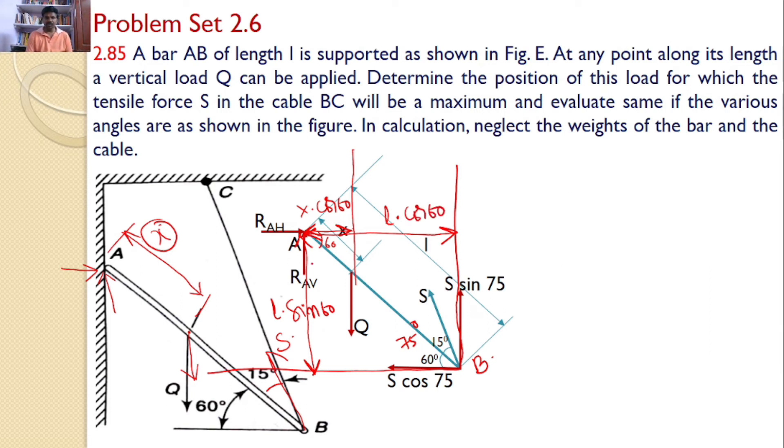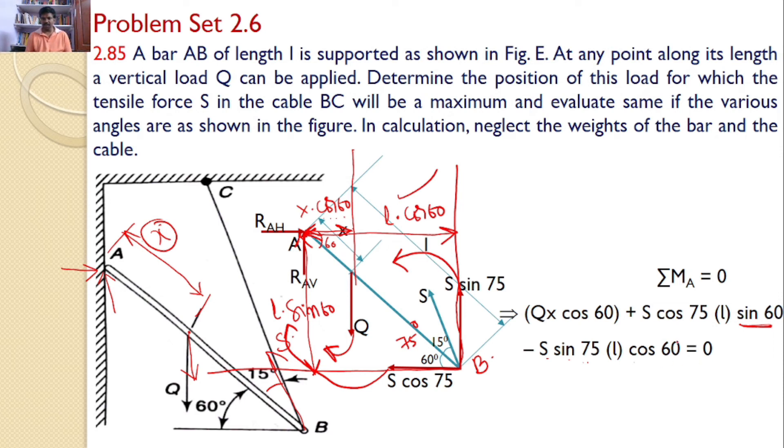Hence I can apply the moments about point A. So if you take the moments about point A, the Q multiplied by the perpendicular distance x cos 60 plus S cos 75 into the perpendicular distance L sin 60. The force is S cos 75 and the distance is L sin 60. So hence it is S cos 75 L sin 60. So these two will create the moments in this direction. But this S sin 75 will create a moment in the opposite side. It is minus force is S sin 75 into perpendicular distance is L cos 60. That is equal to 0.